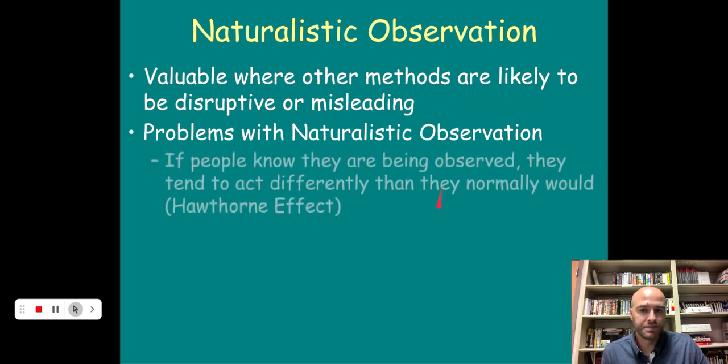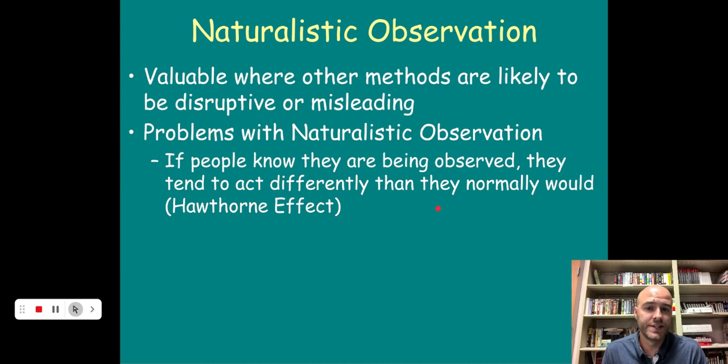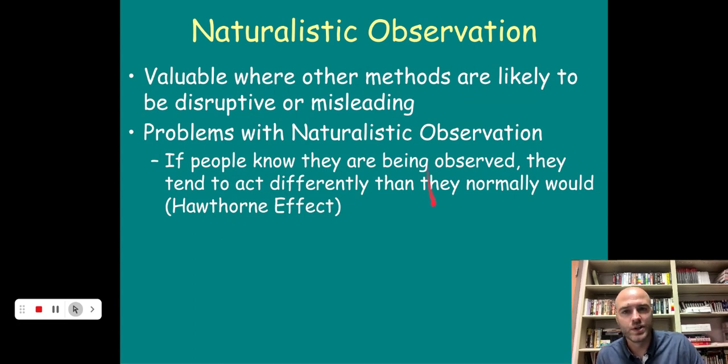So why might we use that for humans? It's valuable where other methods are likely to be disruptive or misleading. But there are obviously some problems with this. If people know they're being observed, they tend to act differently than they normally would. That's called the Hawthorne effect. If you know you're being watched, you're going to act differently. If I'm out for a run and I know some people are watching me, for some reason I feel myself speeding up because I want to look good. Or maybe you're in class and you're a little bored, you see a Snapchat icon pop up and you pull it up. But then your teacher walks over. You put that thing away real quick. When you know you're being watched, your behavior changes. So that's one issue with naturalistic observation.